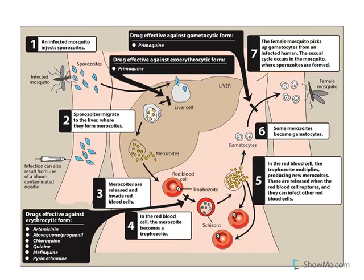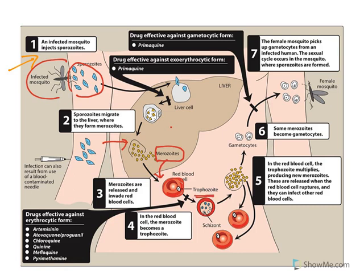The first step of the life cycle is that an infected mosquito injects sporozoites into the human body. These sporozoites get into the liver and are developed into merozoites by feeding on liver cells. The merozoites are then released into the blood, where they develop into trophozoites. As trophozoites multiply, they cause rupture of red blood cells.